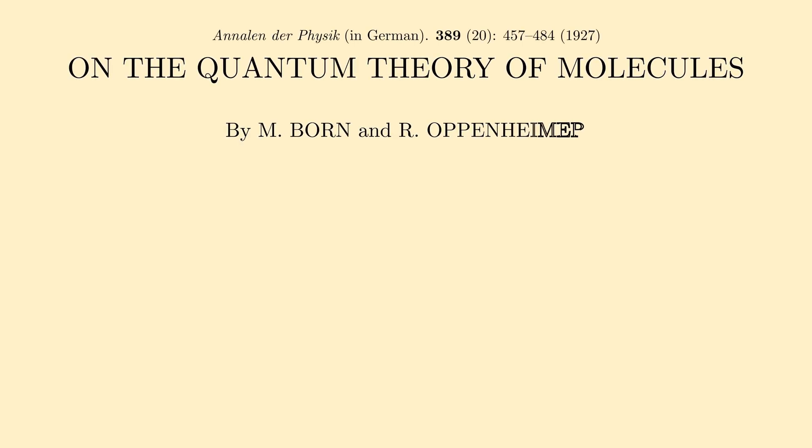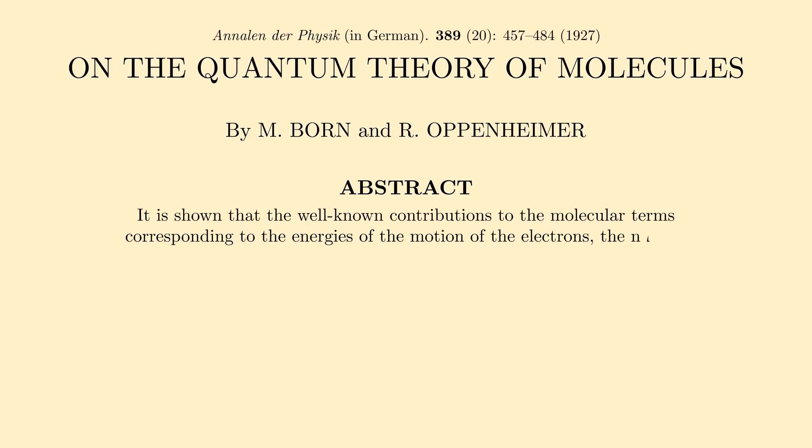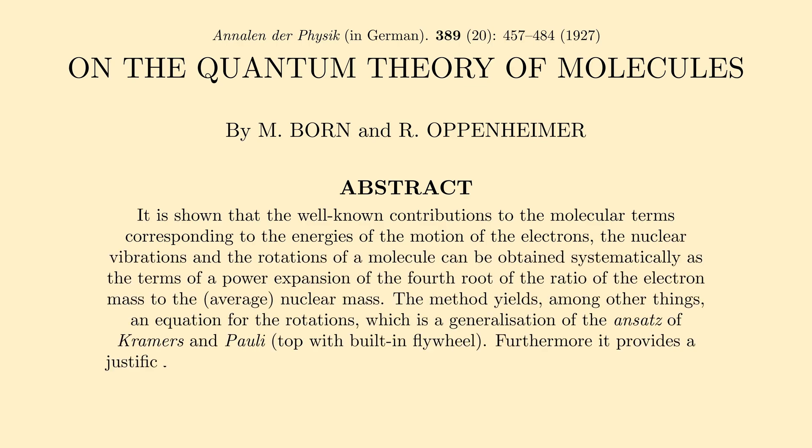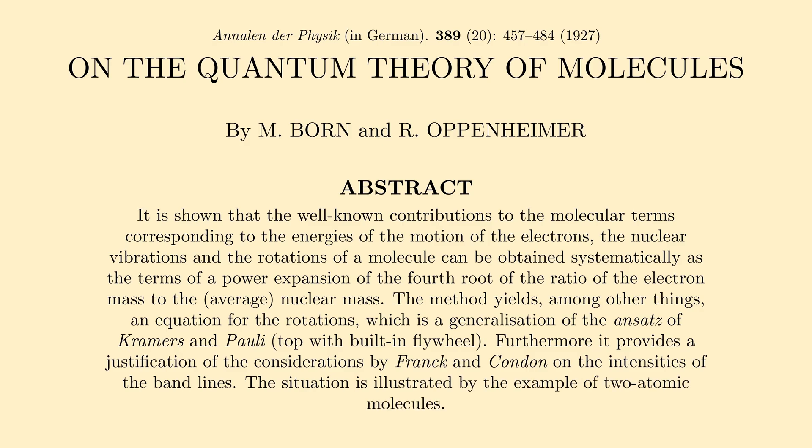Almost a century back, in 1927, at the age of 23, Oppenheimer published a paper titled On the Quantum Theory of Molecules with his research advisor Max Born that outlined what is commonly referred to as the Born-Oppenheimer approximation.